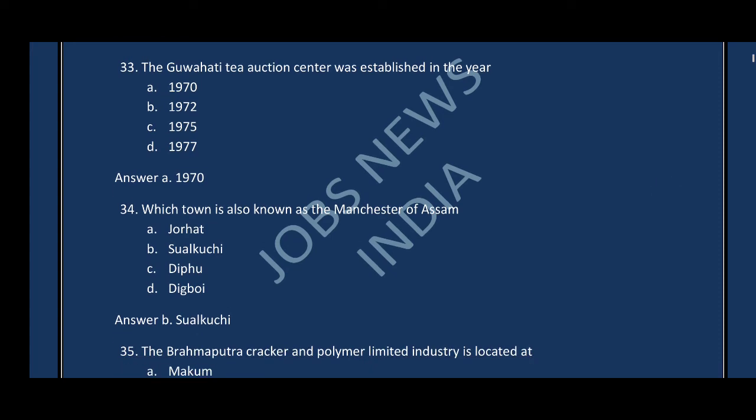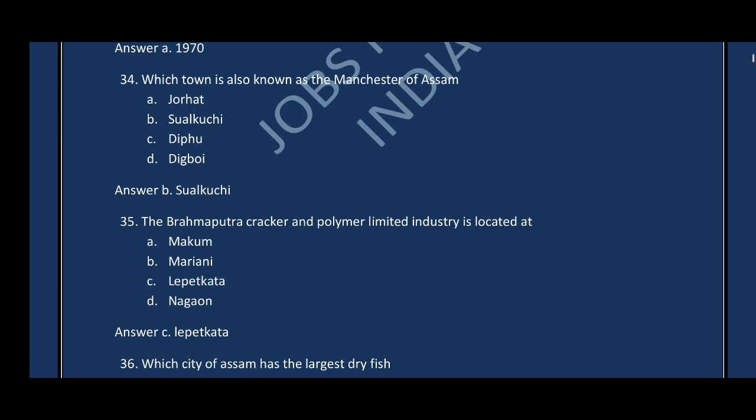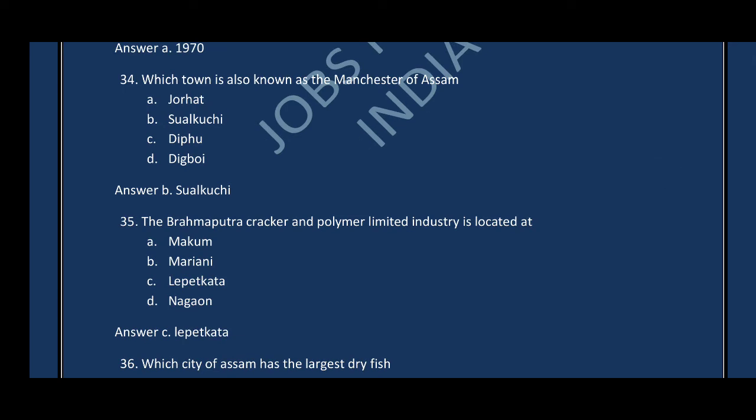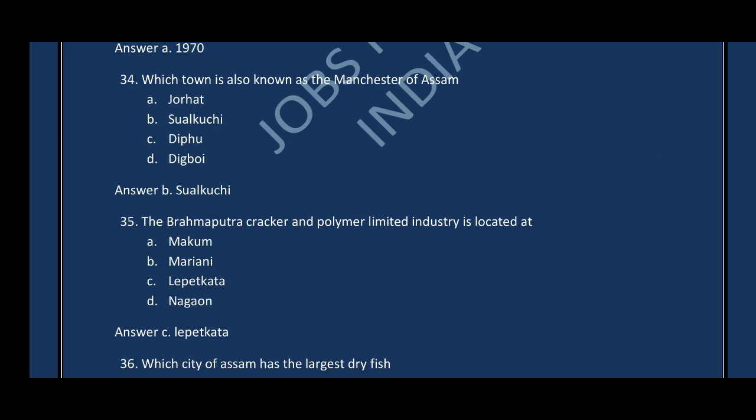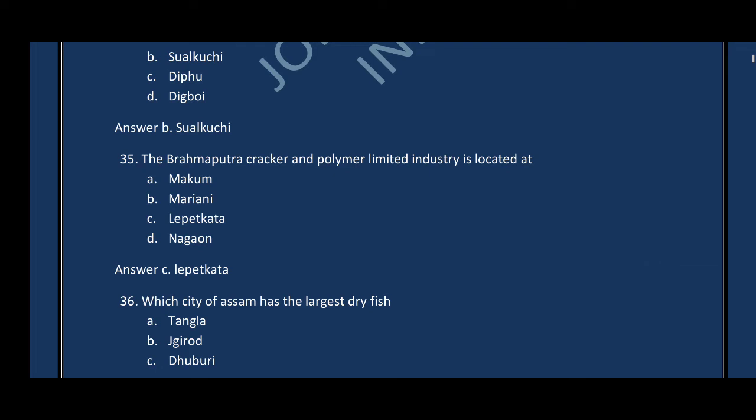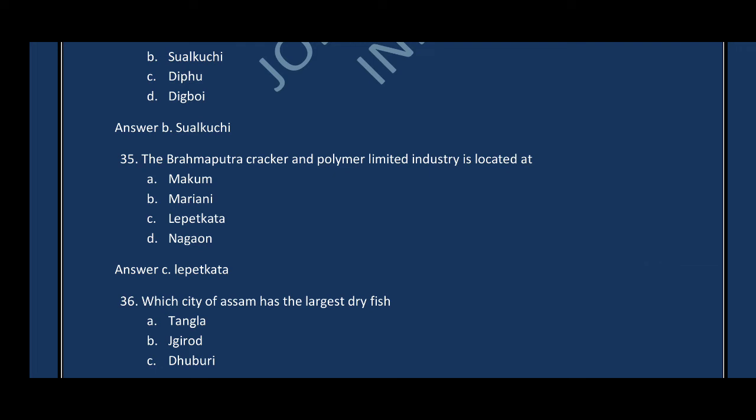Question number thirty-four: Which town is also known as the Manchester of Assam? The correct answer is option B — Sualkuchi. Question number thirty-five: The Brahmaputra Cracker and Polymer Limited Industries is located at — the correct answer is option C, Lepetkata.